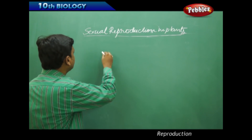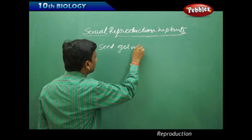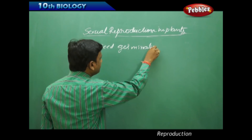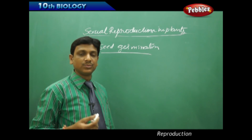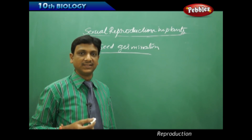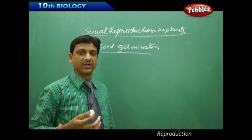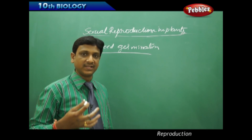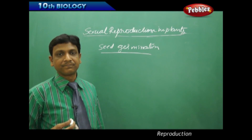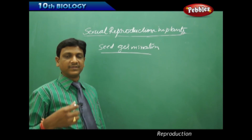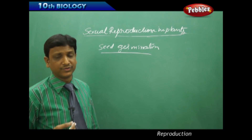Now let us see how seed germination takes place. We can recall the seed germination experiments conducted in lower classes — taking some Bengal gram, soaking them for 3 to 4 hours, then tying them in a wet cloth and keeping them in a dark place. The next day, you can find white-colored sprouts — baby roots — coming out of the seeds.